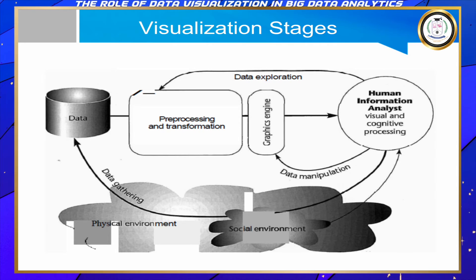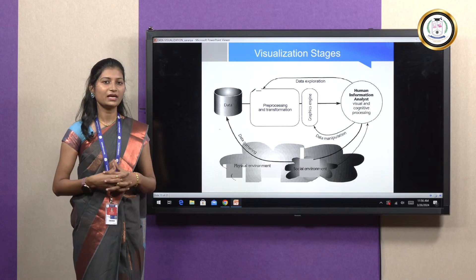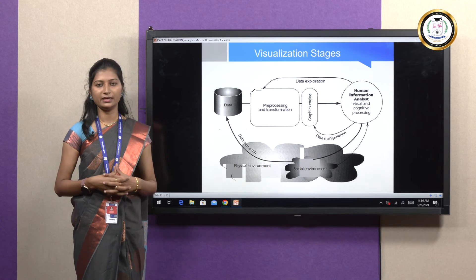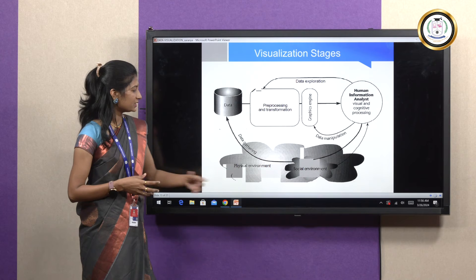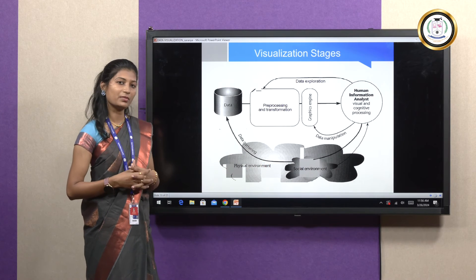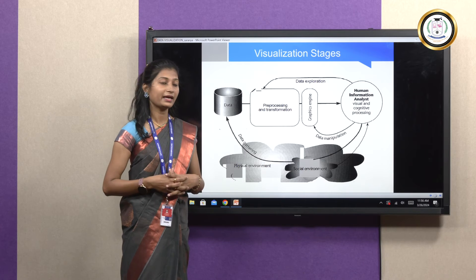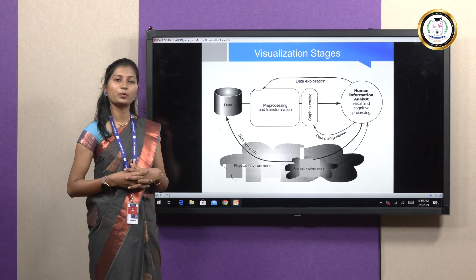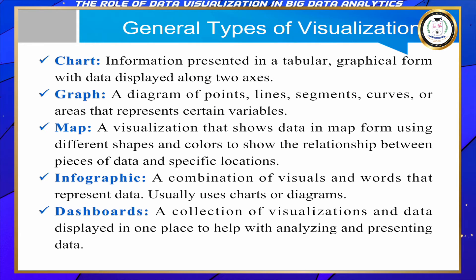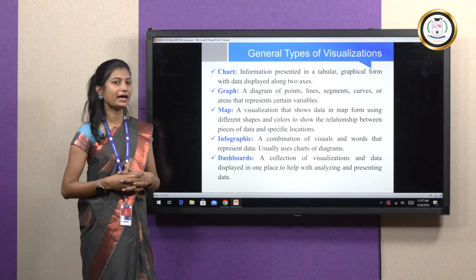When you look at the visualization stage, you can compare it with IDA — Intelligent Data Analysis or big data analytics. We discussed the three stages: data preparation, data analysis, and data validation. Looking at the diagram, it starts from pre-processing and transformation, dealing with the data preparation stage, collecting from multiple physical and social environments. The inferred data is then given to the graphics engine, which generates the visualization for human cognitive processing.